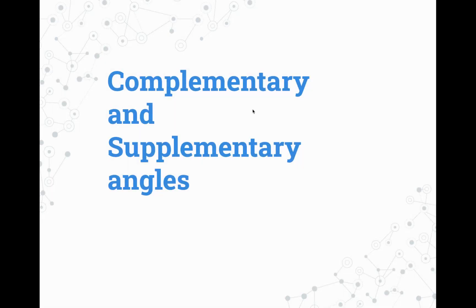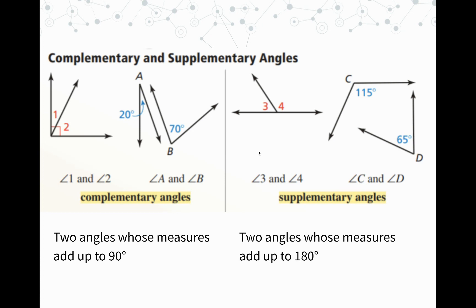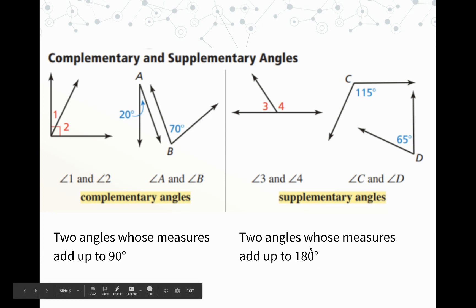First we have to do a little review of complementary and supplementary angles. One of those angle pair relationships adds up to 90 degrees, and one adds up to 180 degrees. Complementary angles — you see this little right angle mark — angle one and two are complementary, and angle A and angle B are also complementary. Complementary angles add up to 90 degrees. Supplementary angles add up to 180 degrees. Two angles whose measures add up to 90 degrees are complementary; two angles whose measures add up to 180 degrees are supplementary.